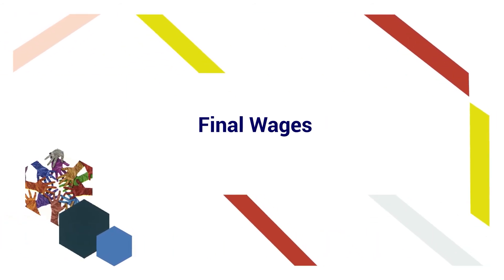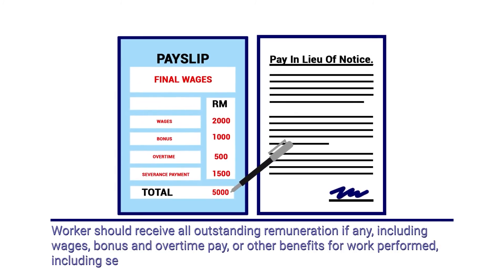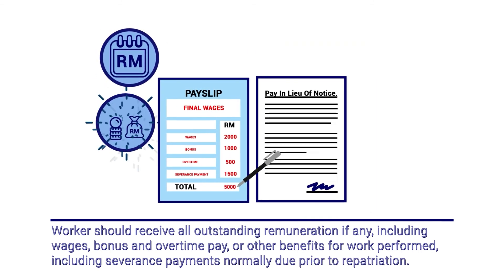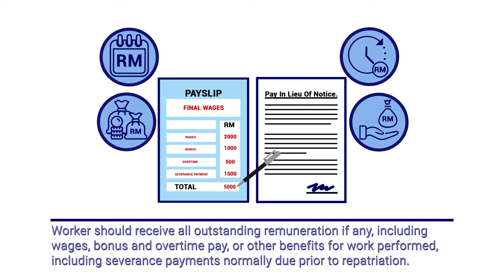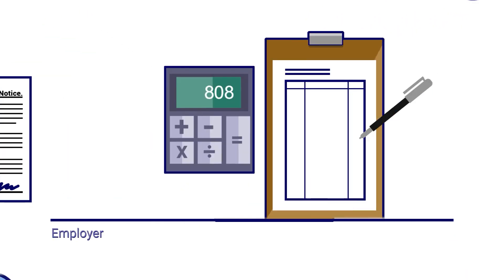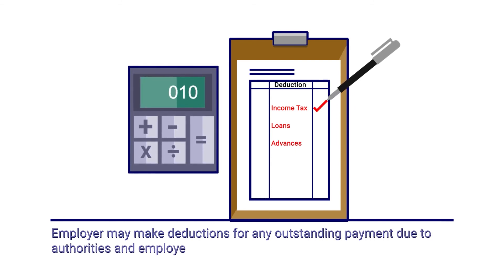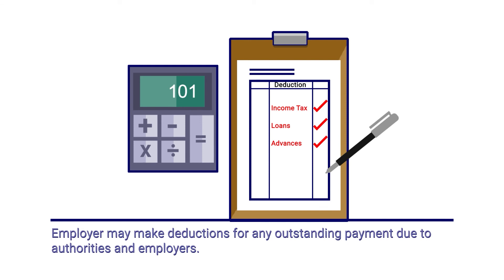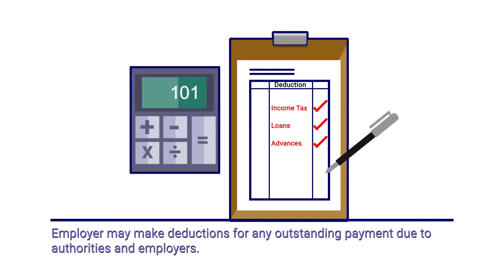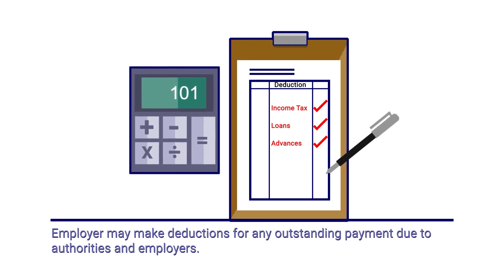Final wages. Upon termination of employment, the migrant worker should receive all outstanding remuneration, including wages, bonus, overtime pay, or other benefits for work performed, and severance payments normally due prior to repatriation. Employers may make deductions for any outstanding payment due to authorities and employers, such as income tax payment, authorised deductions for meals, accommodation or services, or notice payment as stipulated in the Employment Act or terms and conditions of employment, if workers terminate the contract prematurely without cause and notice.